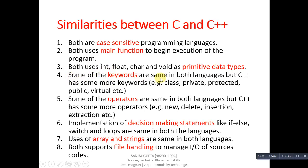Some of the keywords are the same in both languages, but C++ has some additional keywords like class, private, protected, public, virtual, etc. Similarly, some operators are the same in both languages, but C++ has additional operators like new, delete, insertion, and extraction operators, which are used with cout and cin.